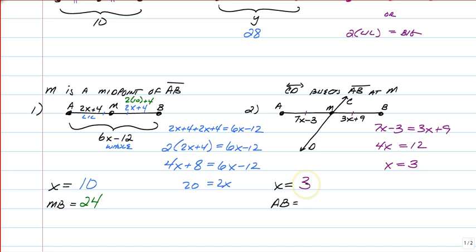So we know the value of x. We want to find the length of the whole thing from A all the way to B. So you have to substitute x into the expressions. So AM is 7 times 3 minus 3, which is going to give you 18 for AM, and 3 times 3 is 9 plus 9 is also 18. So 18 plus 18 is 36. Alright, that's how you work with segment bisectors and midpoints.